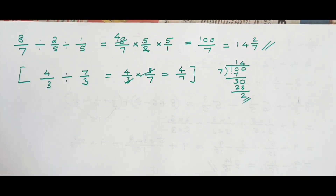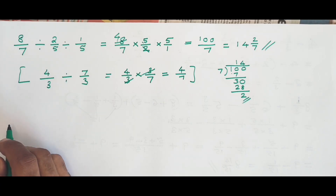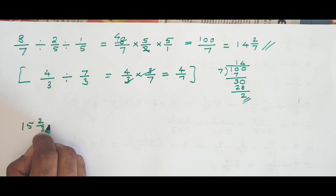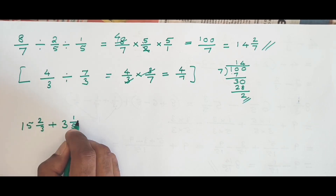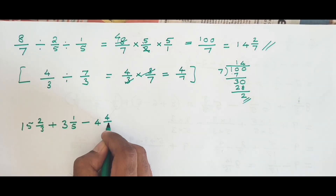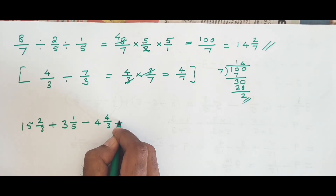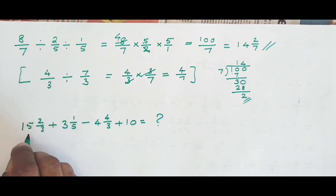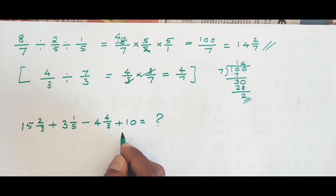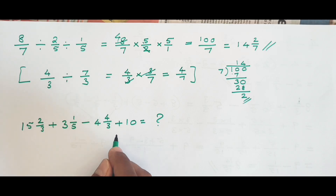Using all the different techniques we have discussed, here is a practice problem: 5 and 2 over 3, plus 3 and 1 over 5, minus 4 and 4 over 3, plus 10. Simplify this fraction using all the different strategies applied here and mention the answer in the comment section. If you found the video useful, please like, share, and subscribe. Thanks for watching, and see you in the next video.